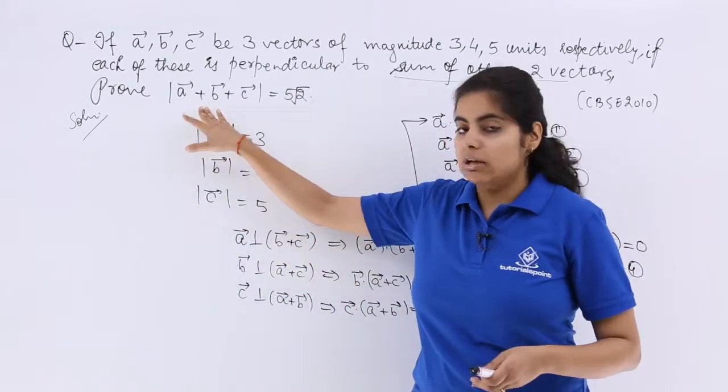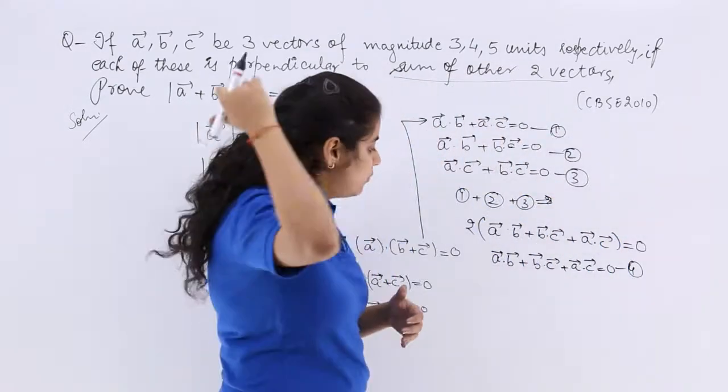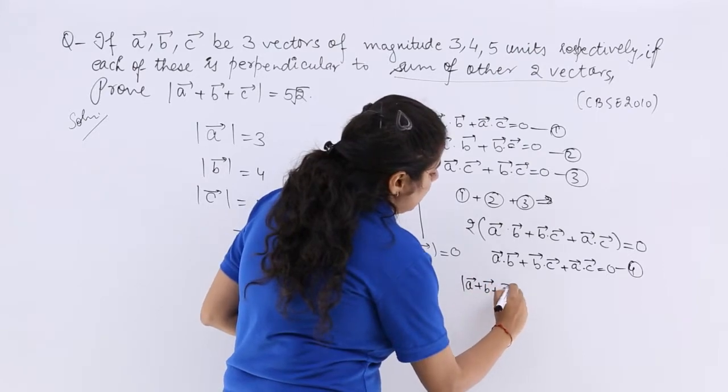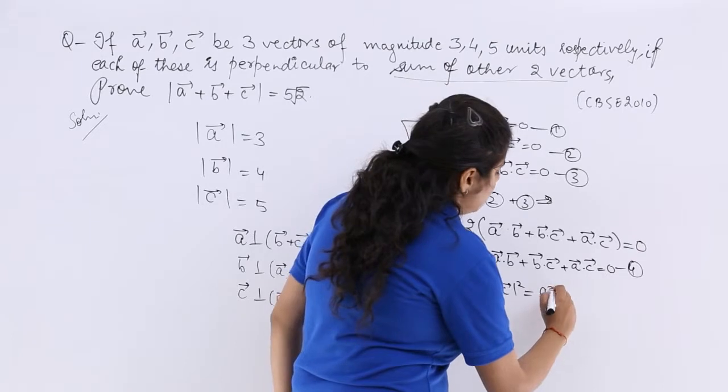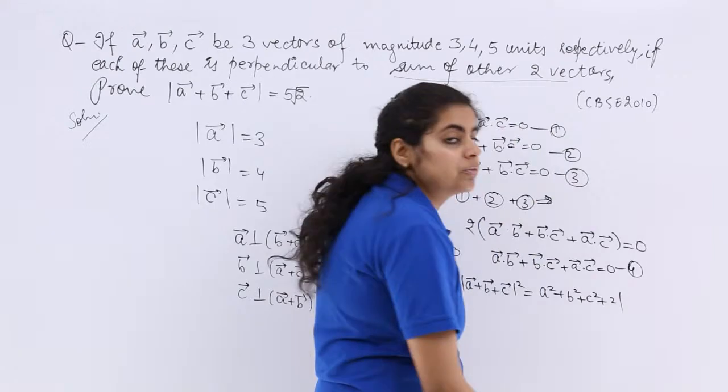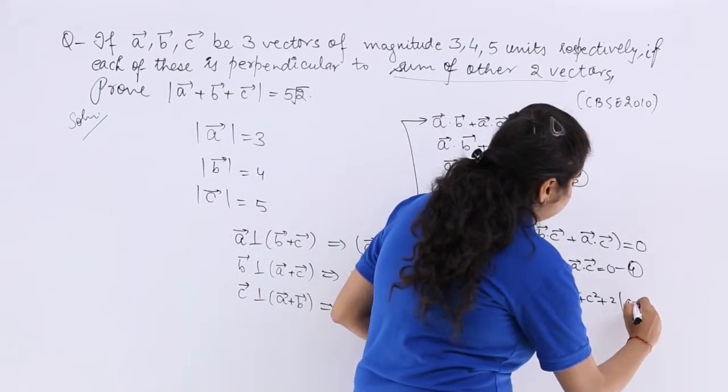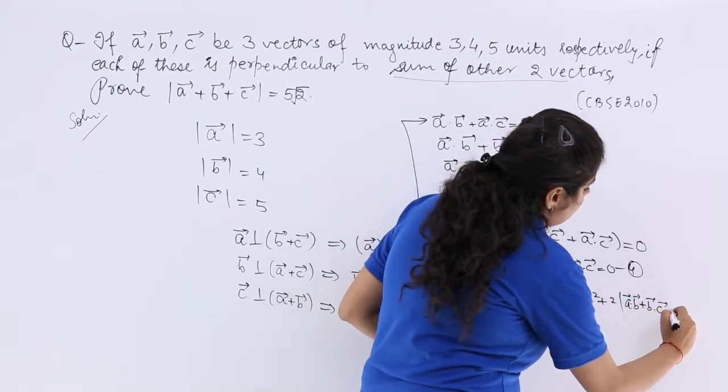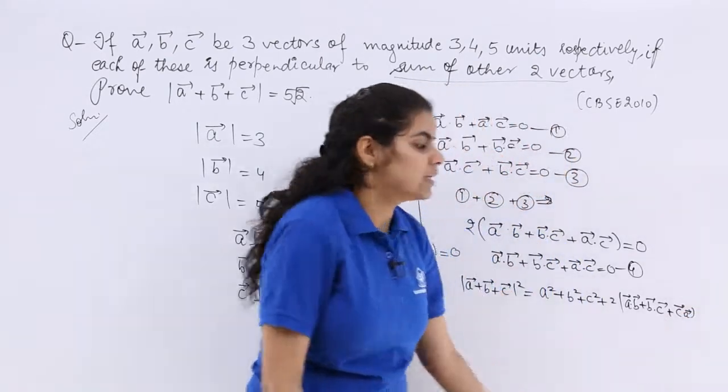Now this is regarding mod A plus B plus C. So if I have to open this up, I know that this is a formula of whole square, which is mod of A square plus B square plus C square plus twice times AB plus BC plus CA in vector sign.